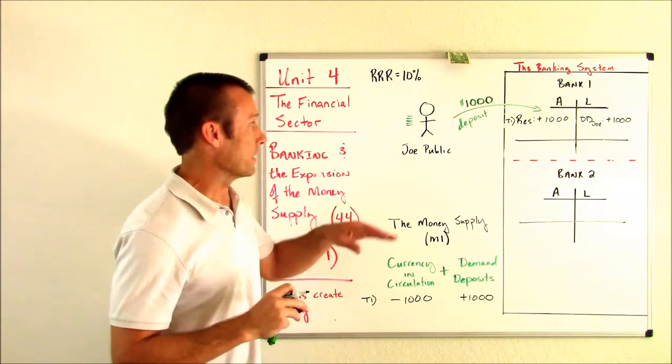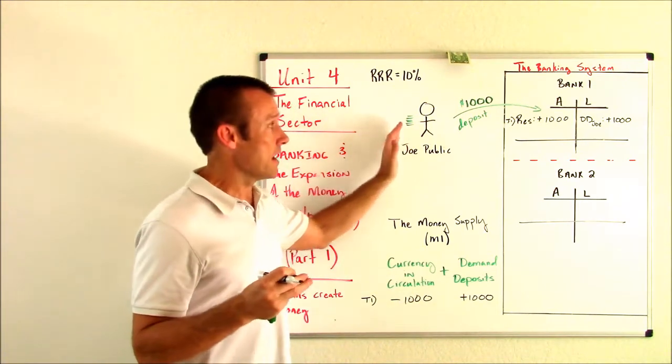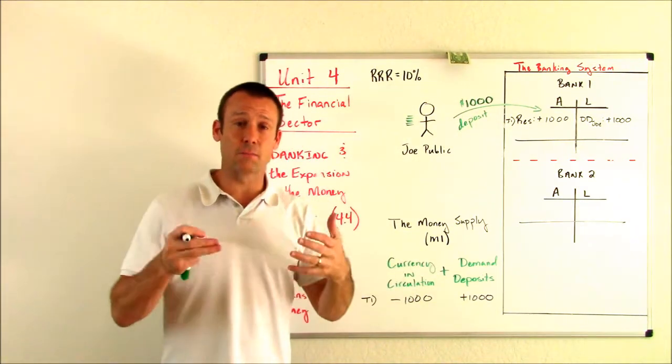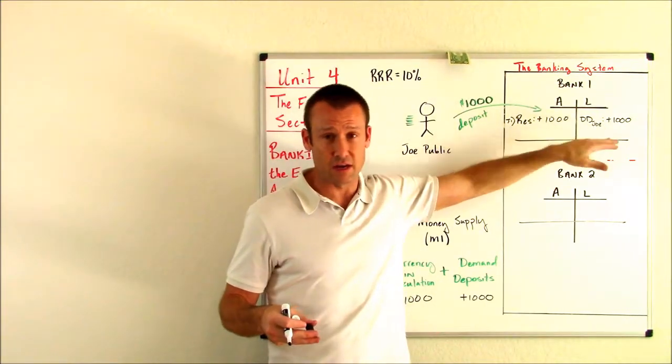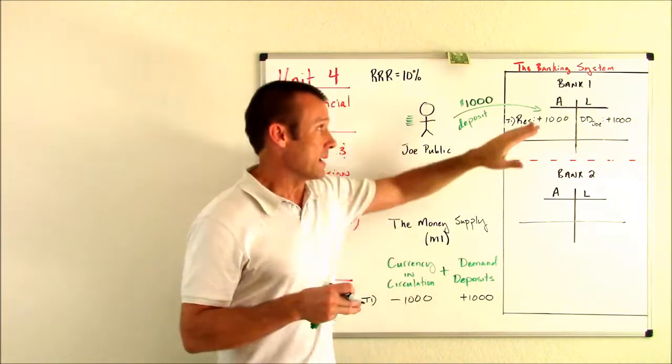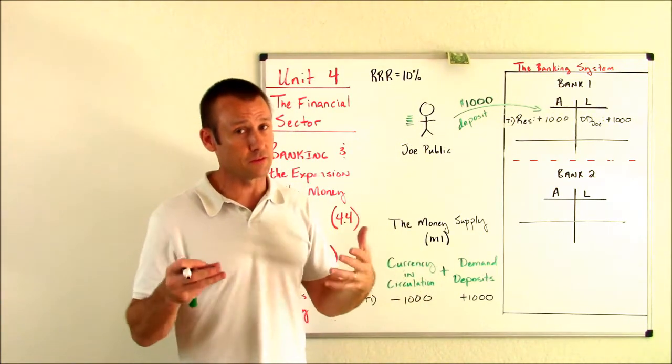Think about it this way. Joe, he used to buy $1,000 of goods and services with that currency. After the deposit, he can still buy $1,000. He doesn't have the currency, but he's now got money in his checking account. He can still buy $1,000 of goods and services. And as we said, bank one can't buy any goods and services with this deposit.